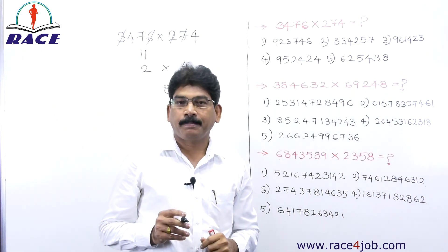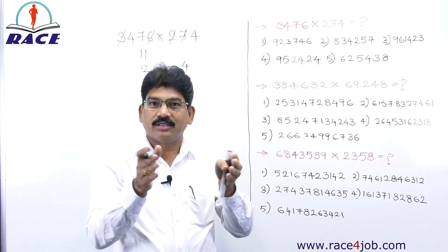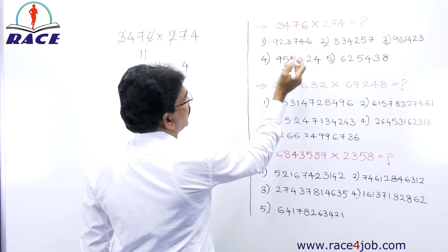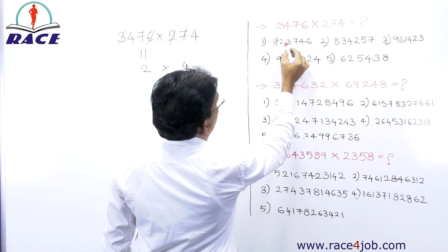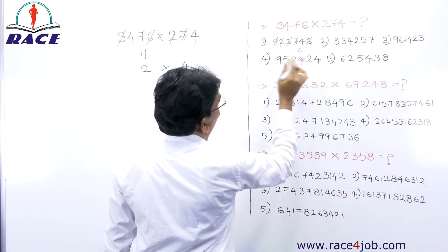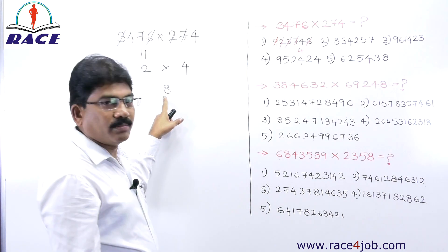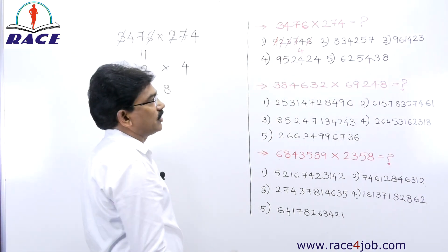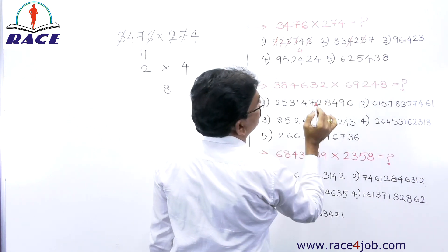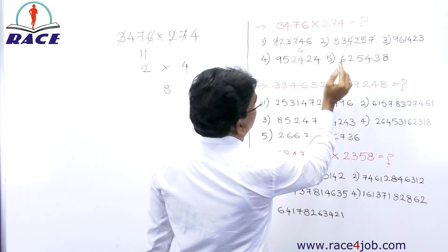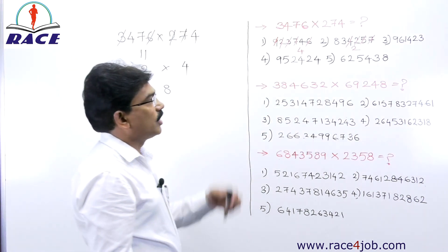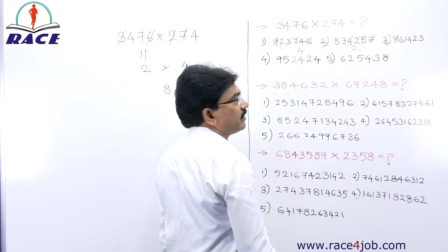Now check all the options. For each option, add up all the digits and strike off any nines or combinations that sum to 9. For option 1: strike off 9, strike off 2 and 7 (=9), strike off 3 and 6 (=9) — only 4 is left. First option digit sum is 4, but our answer needs 8, so this cannot be our answer. For option 2: 4 and 5 give 9, 2 and 7 give 9, then 8+3=11, 1+1=2. Second option digit sum is 2 — not our answer.